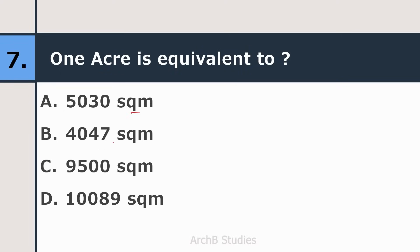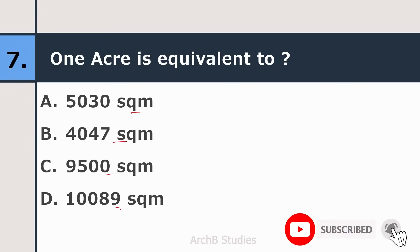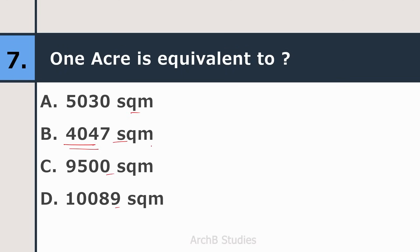Seventh question: one acre is equivalent to — 5030 sq m, 4047 sq m, 9500 sq m, or 10089 sq m? The correct answer is 4047 square meters. Actually it is 4046.86, which rounds off to 4047.